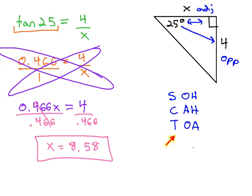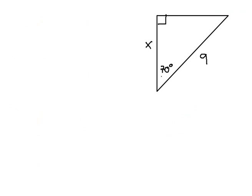Let's try another example where we can see that worked out. In this triangle, we're given the 70 degrees. So, let's see what the x and 9 would be labeled as.